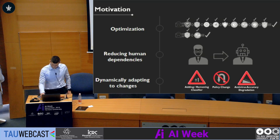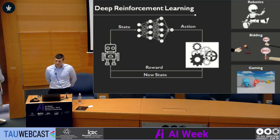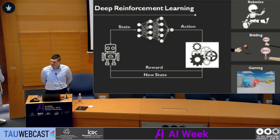Our solution is to use reinforcement learning — a known machine learning method used in different domains such as robotics, bidding, games, and autonomous cars. The idea of reinforcement learning, as opposed to other machine learning algorithms, is that it is a trajectory-based process that receives rewards — unknown rewards — for any action taken by the agent.